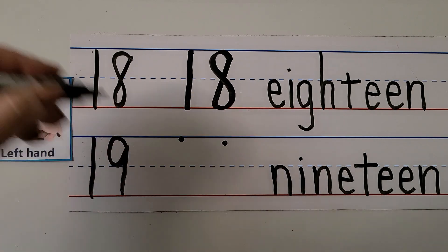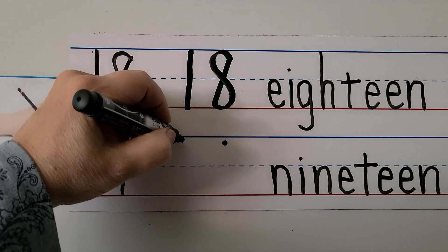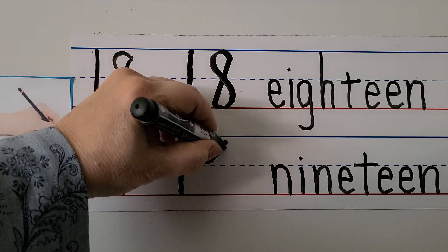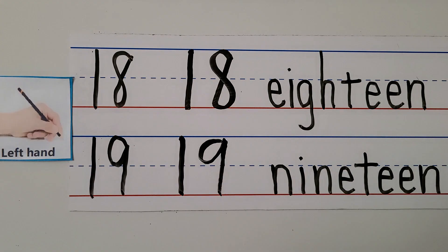We can write the number 19. It's going to be a 1 with a 9 next to it. We make our 1, we make a ball, and come straight down. 19.